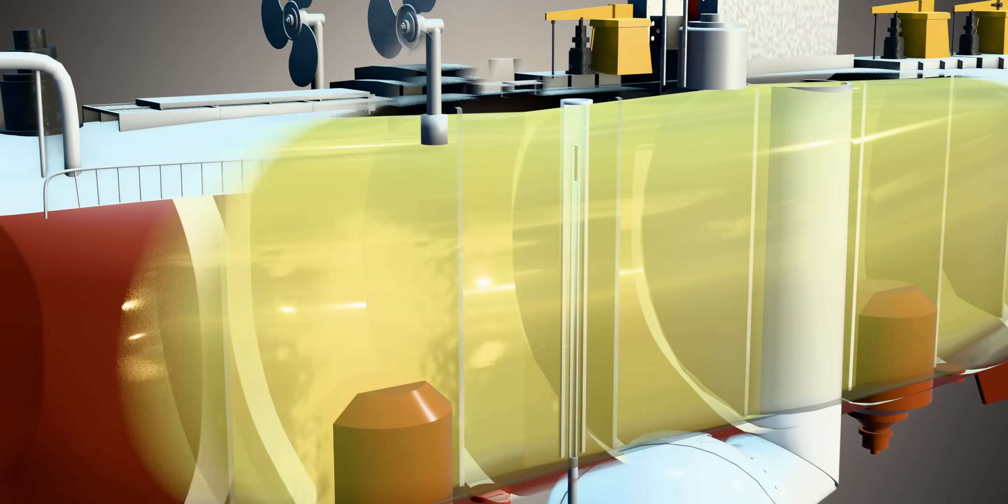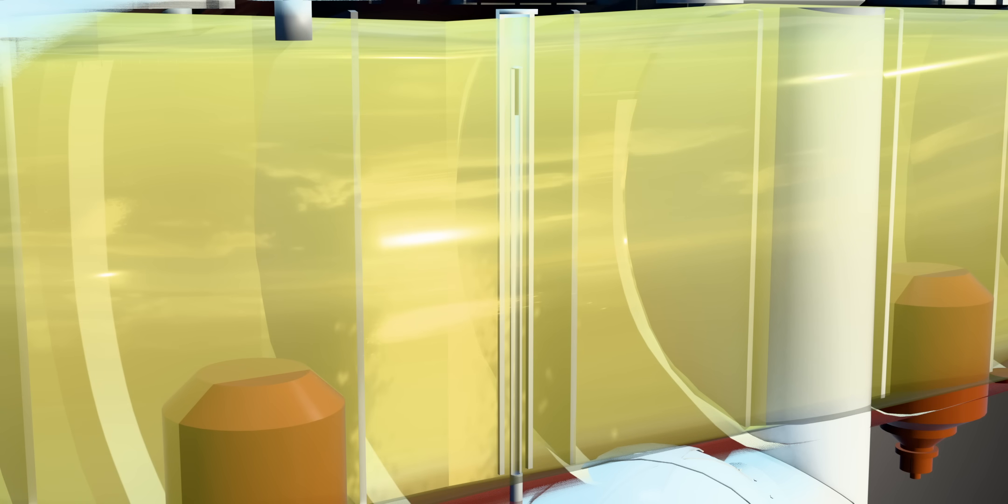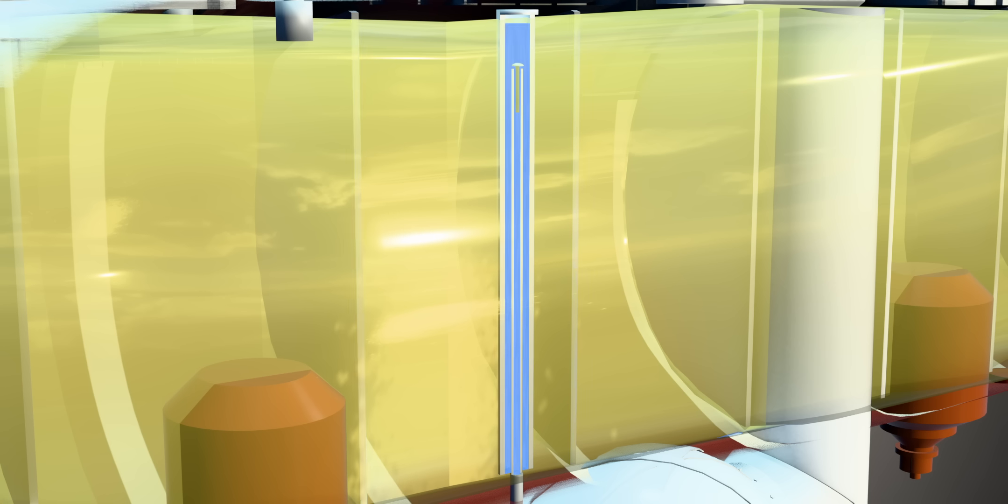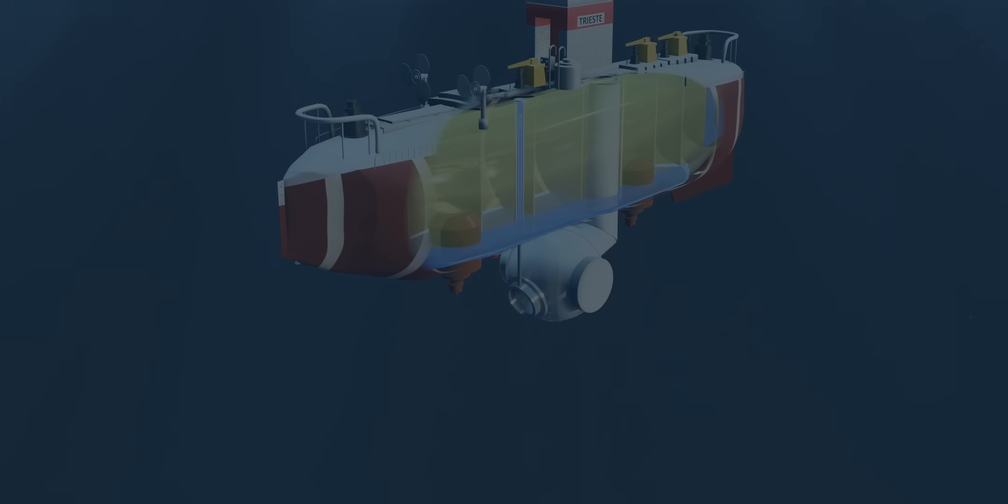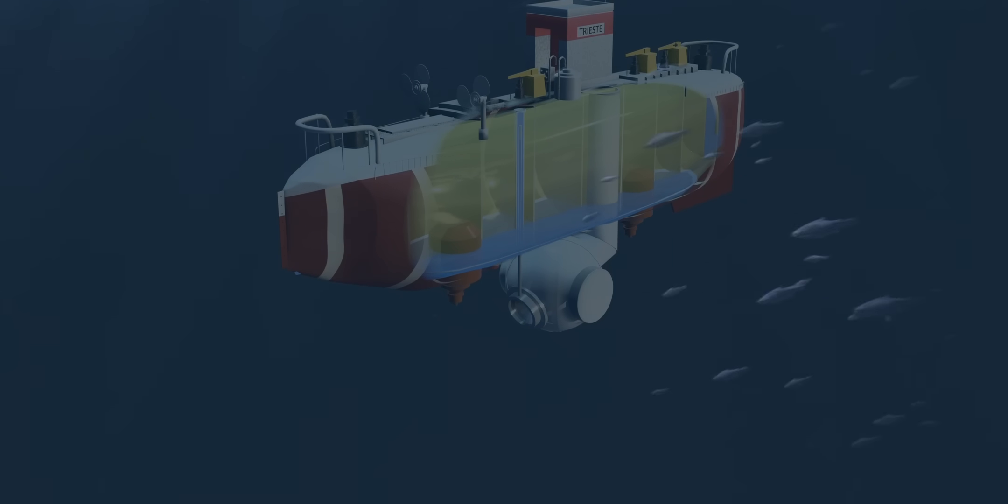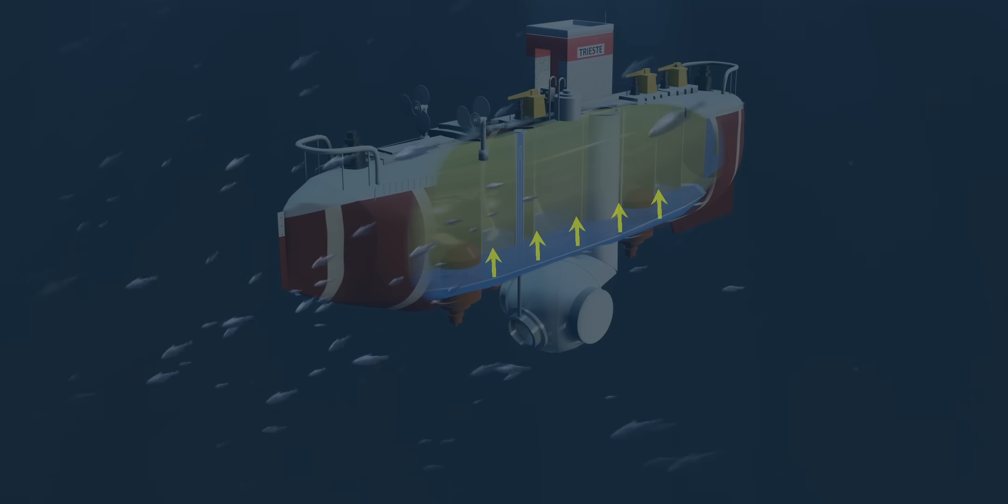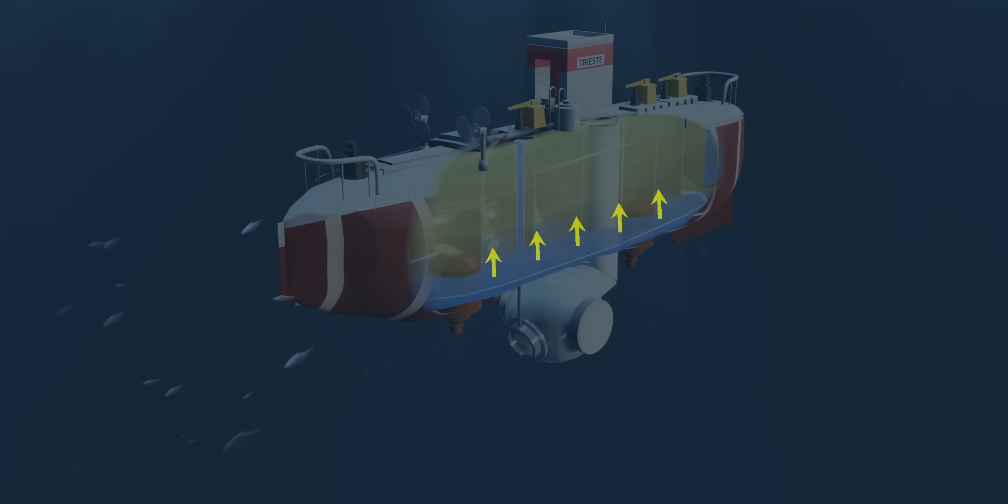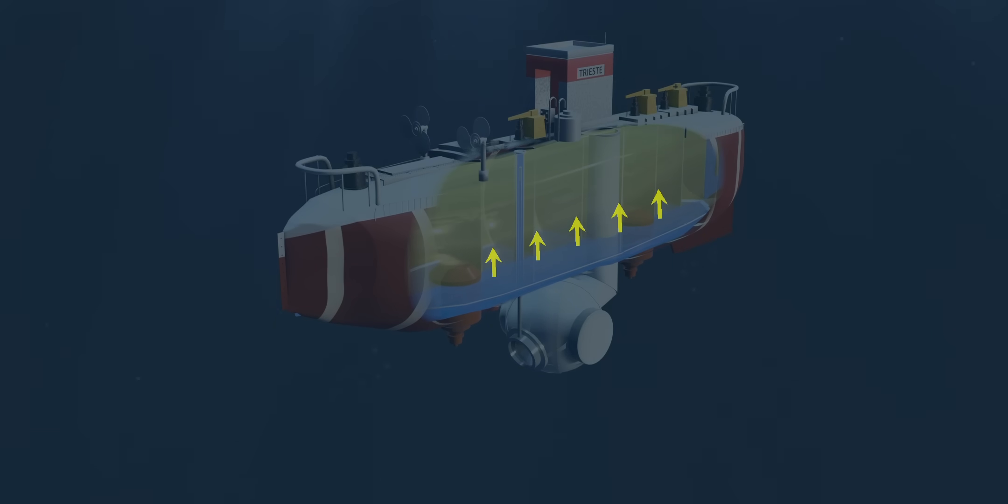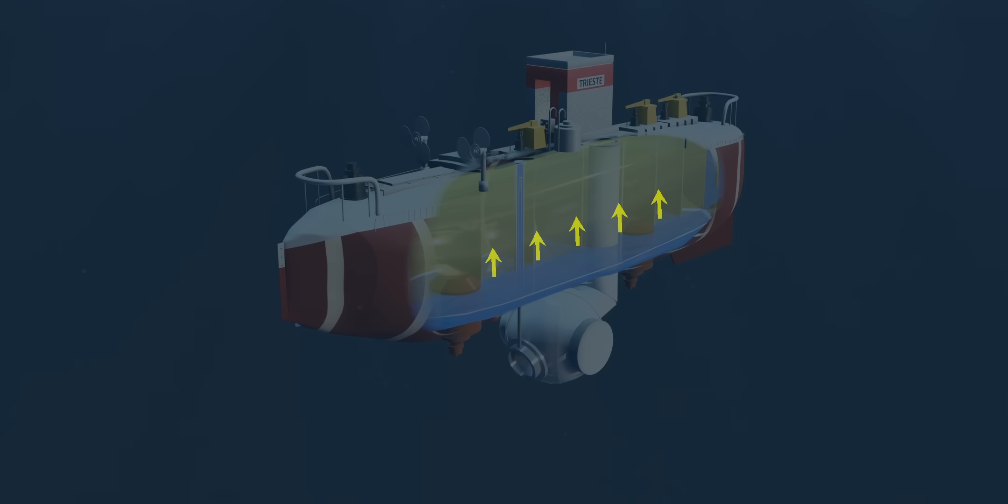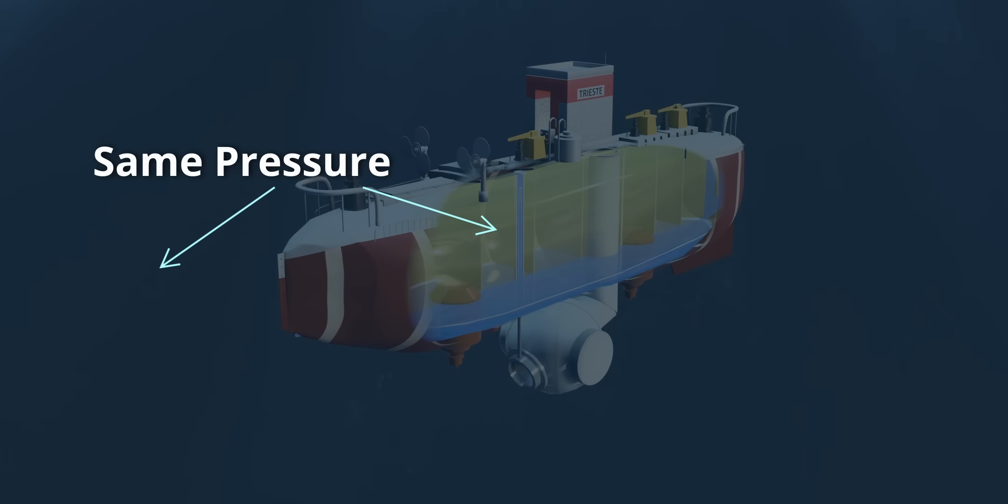This vessel had a genius technique to keep the pressure of the gasoline the same as that of the surrounding seawater. As the vessel descended, through this pipe the engineers allowed the entry of seawater. Since water is denser, it will always settle at the bottom and of course it won't mix with gasoline. The high pressure push from the water increased the pressure of the gasoline as well. Thus, throughout the journey, it was made sure that the ocean and the inside vessel pressure are the same.